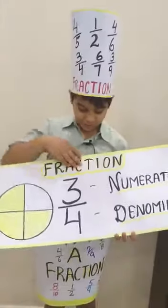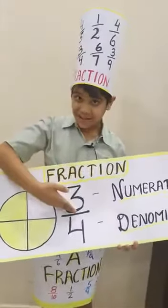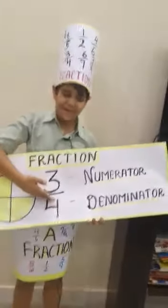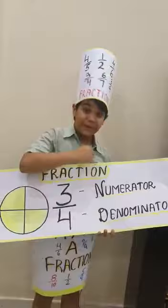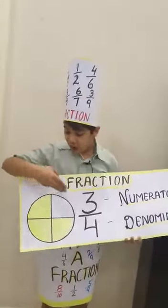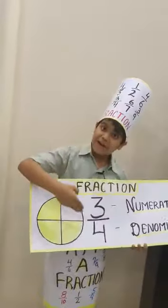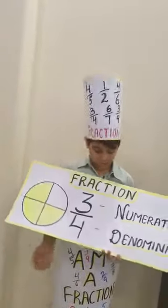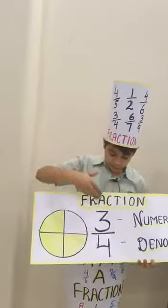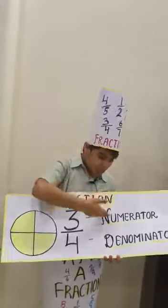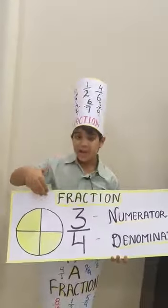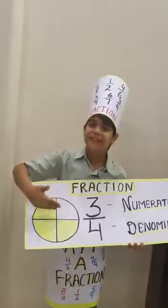I, as a fraction, look like this. The bottom number is the denominator — it shows how many parts an object has been divided into. The top number is the numerator — it shows how many parts of the denominator you are looking for.